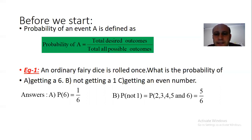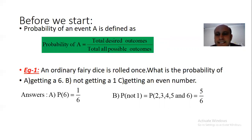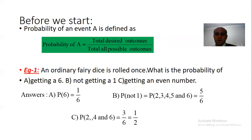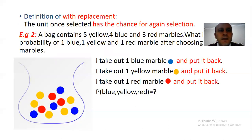For getting an even number: a fair dice has 3 even numbers — 2, 4, and 6. Total desired outcomes is 3 and total all possible outcomes is 6. The answer is 3 over 6, which simplifies by 3 to give 1 over 2.